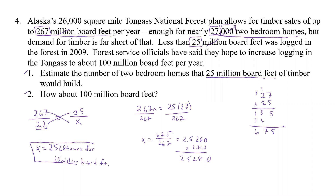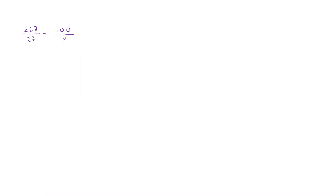For part two — 100 million board feet — we notice 100 is 4 times 25, so we could multiply 2,528 by 4, but we'll use the proportion again. We set up: 267 over 27 equals 100 over x. Cross product gives 267x equals 27 times 100, which is 2,700. Dividing by 267 gives x equals 2700 over 267.